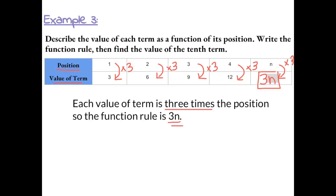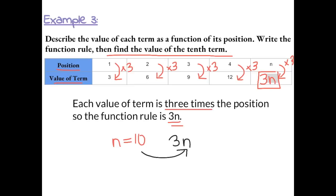We can describe this by saying each value of the term is 3 times the position, so the function rule is 3n. To find the value of the 10th term, we represent n as 10 and use the function rule: 3 times 10 gives us 30. So the 10th term has a value of 30.